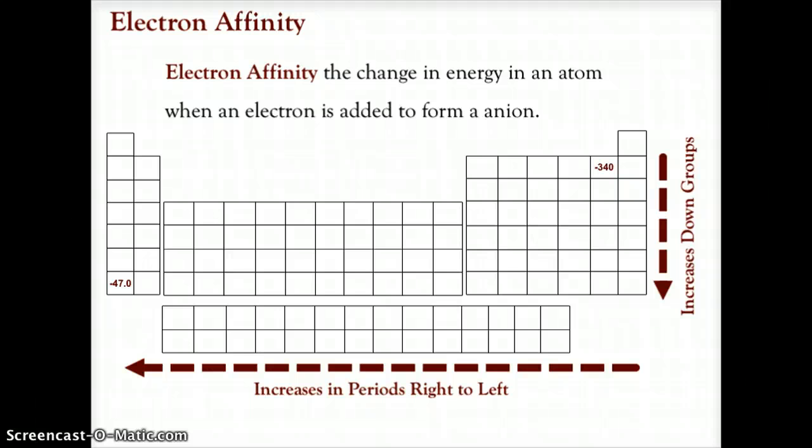Now this is the inverse of ionization energy. But the strange thing about electron affinities is the second electron affinity to add a second electron actually makes this value positive. And so therefore we would follow the same pattern increasing down groups and increasing across periods right to left.